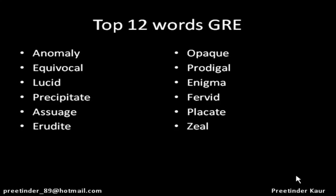Revising the top 12 words: Anomaly — an abnormality. Equivocal — neutral. Lucid — very clear. Precipitate — to fall down. Assuage and placate both mean satisfy. Erudite — knowledge. Opaque — does not allow light to pass through it. Prodigal — wasting. Enigma — a mystery. Fervid — intense emotion. Placate — satisfy. And zeal — enthusiasm.